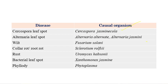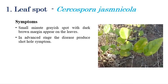Additional diseases include wilt, caused by Fusarium solani; collar rot or root rot, caused by Sclerotium rolfsii; rust, caused by Uromyces hobsonii; bacterial leaf spot by Xanthomonas jasmini; and phyllody, which is a phytoplasmal disease caused by phytoplasma species. We will now see each disease in detail.